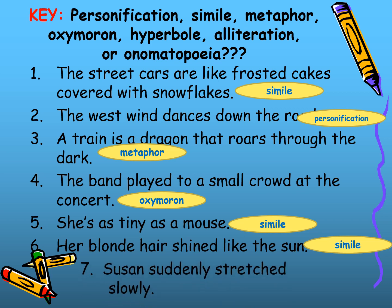'Susan suddenly stretched slowly' — it's alliteration. The poet or writer repeats the consonant S in 'Susan,' 'suddenly,' 'stretched,' and 'slowly.'